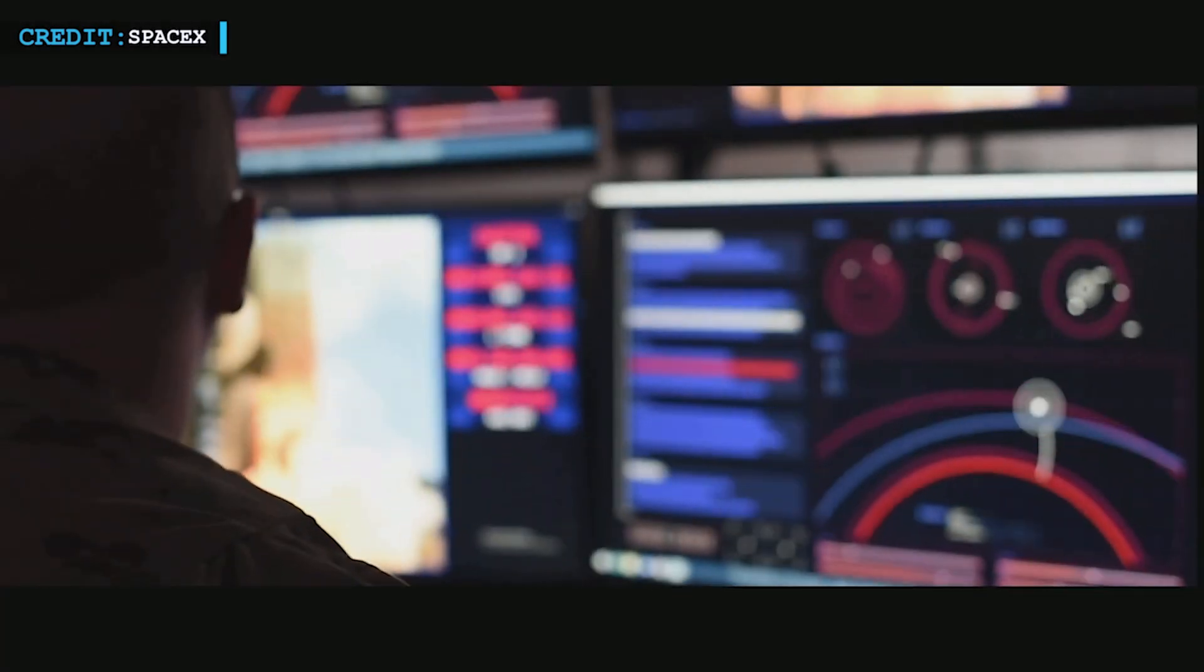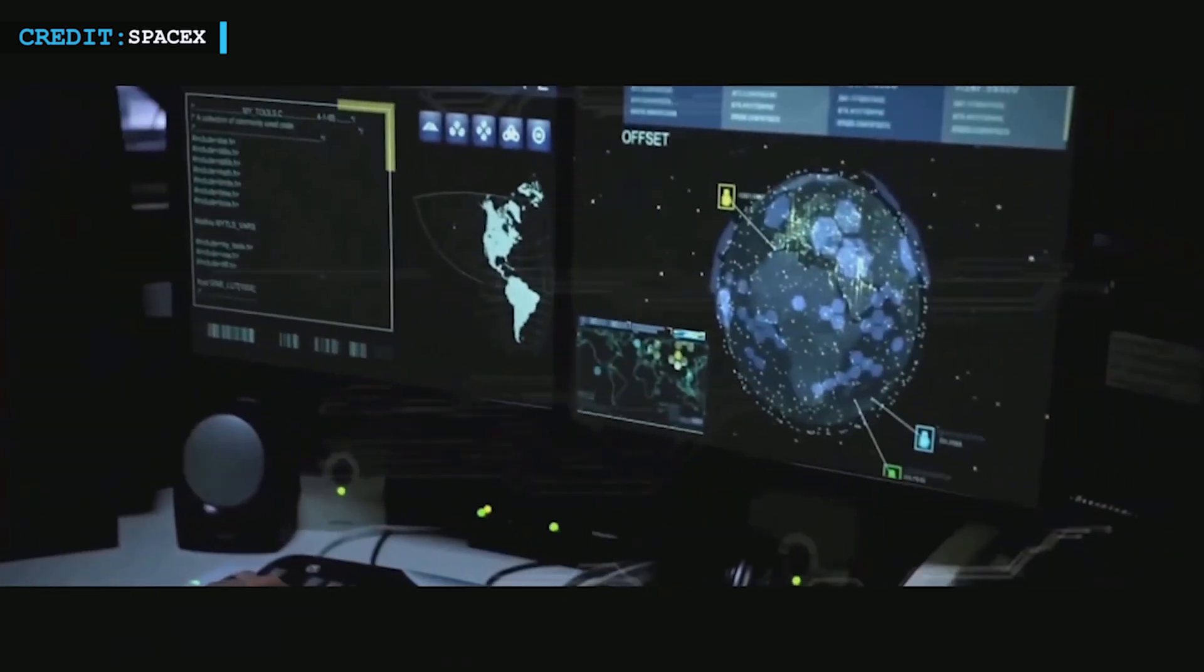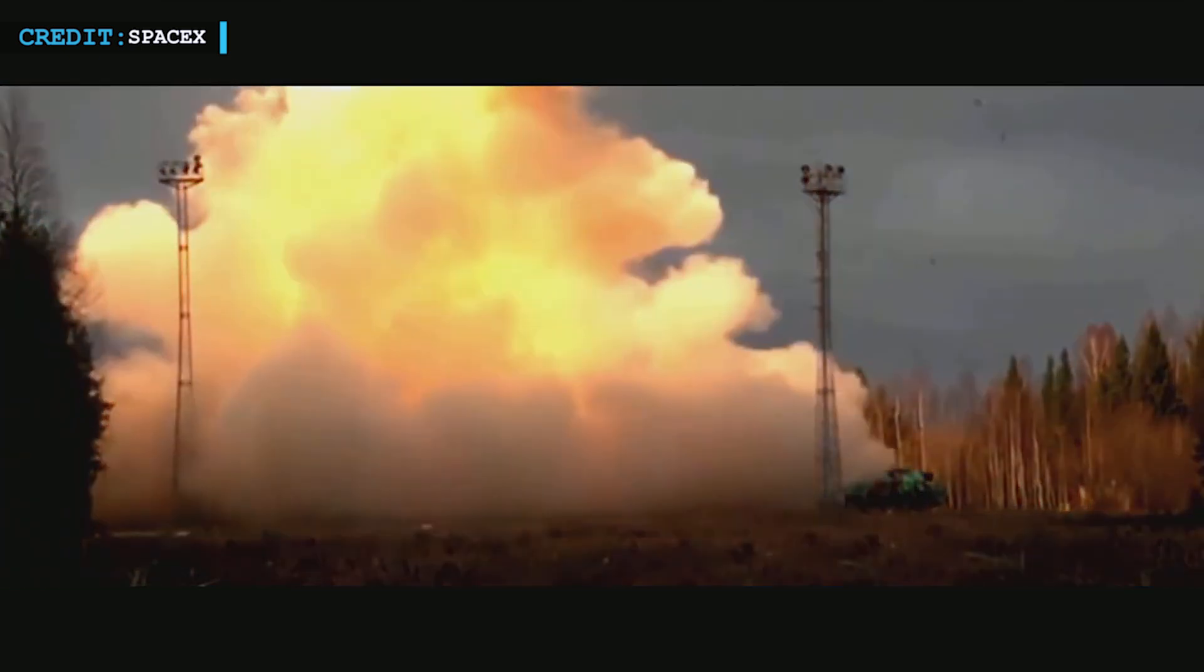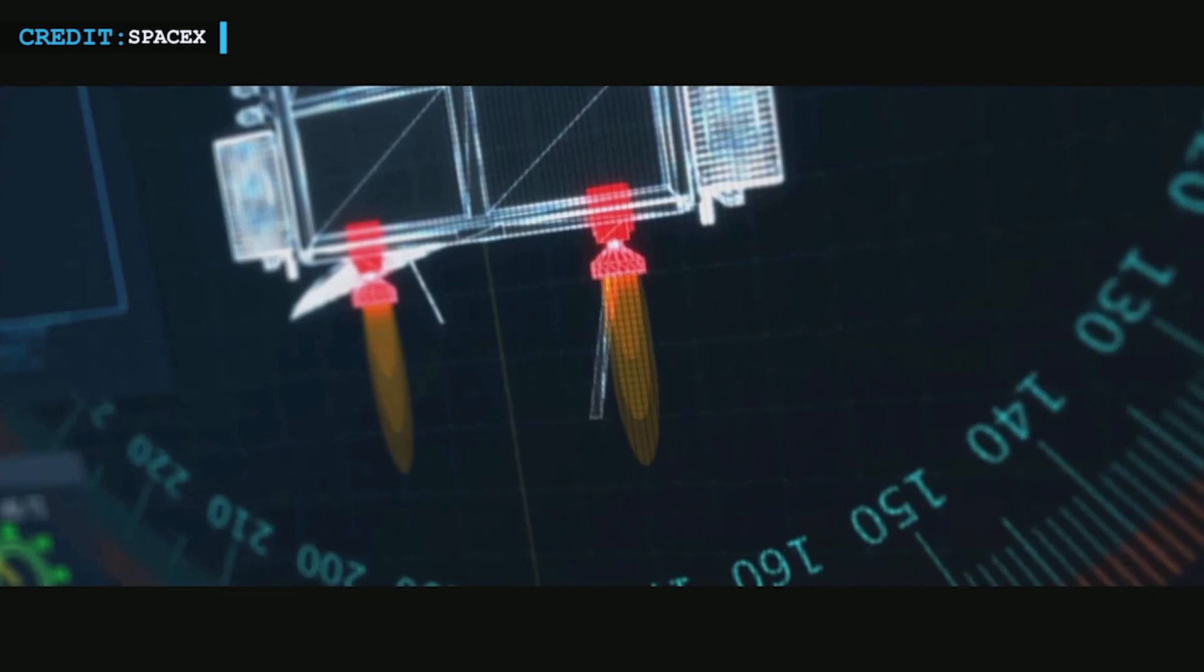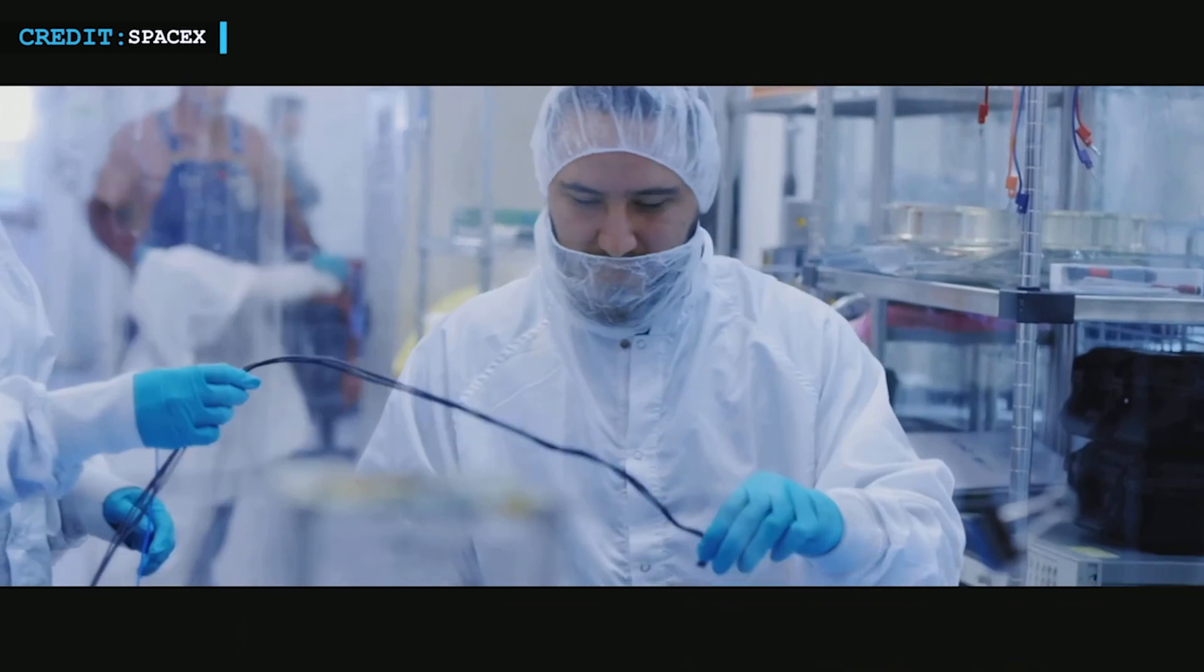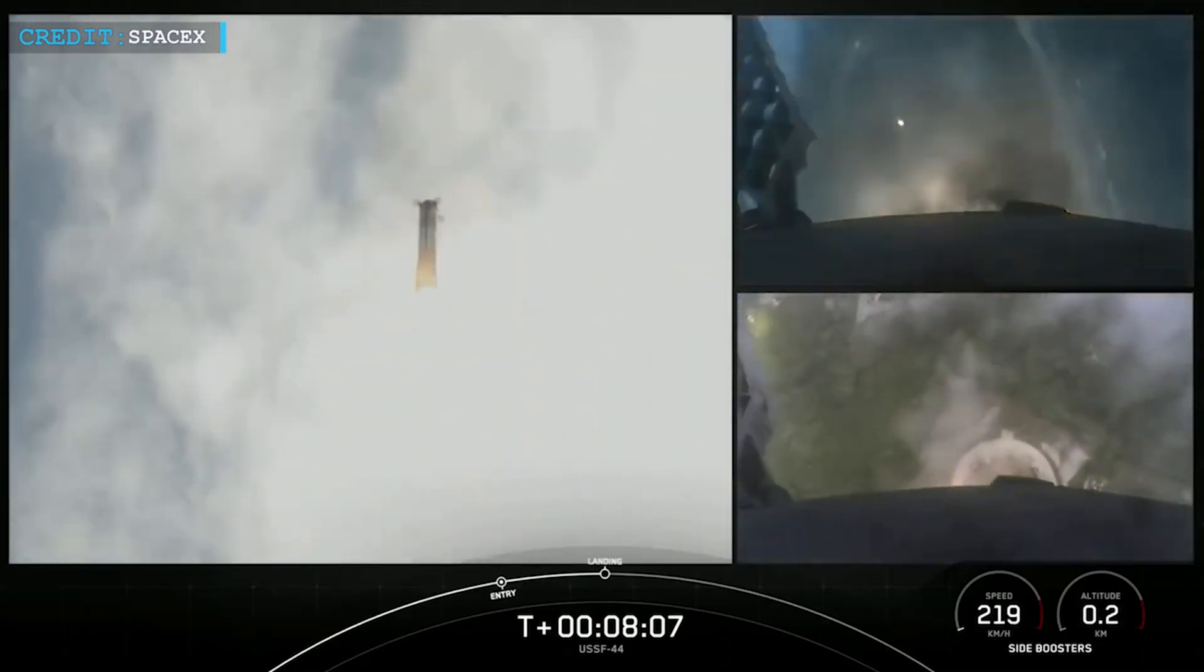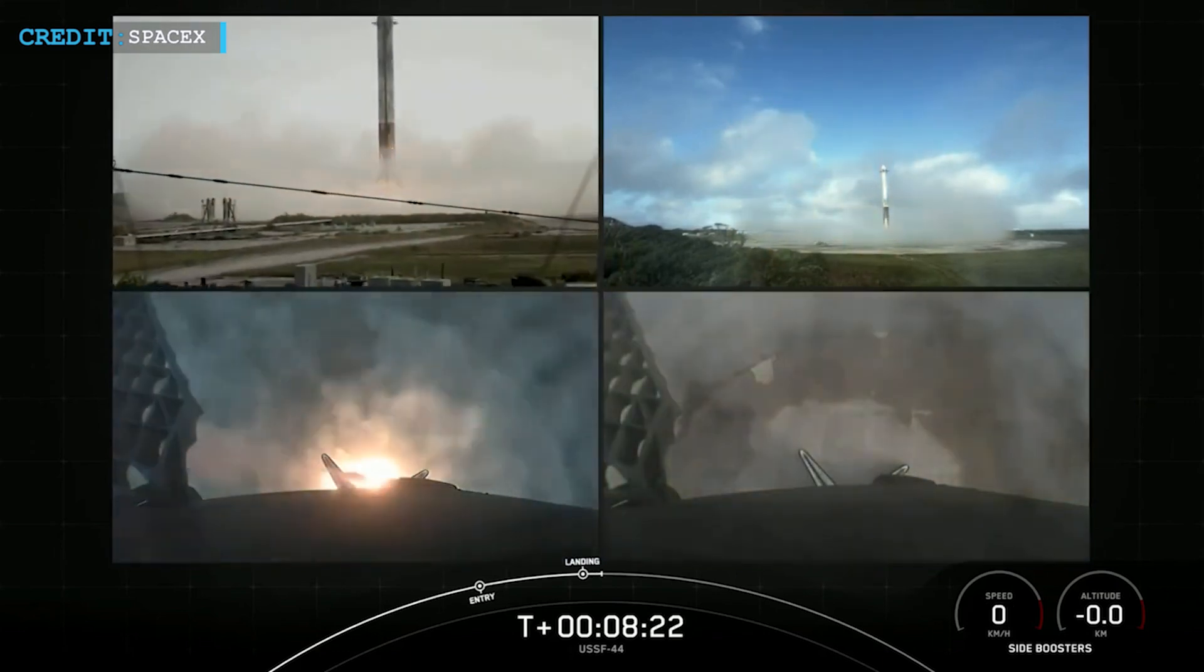As for the payloads, USSF-44 mission added a number of spacecrafts to the 2nd Northrop Grumman Long-Duration Propulsive Evolved Expendable Launch Vehicle Secondary Payload Adapter, commonly known as LDPE-2. According to reports, the payloads include two Lockheed Martin LIN-USSA CubeSats, Tetra 1, and a communication satellite prototype called USUVL. As this launch was carried out for the US Space Force, the launch webcast was brought to an end after booster landing to preserve the confidentiality of the mission.